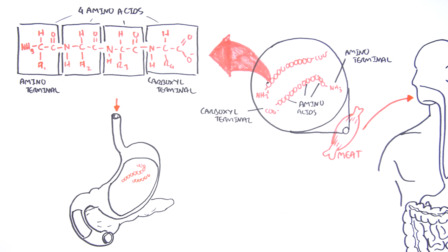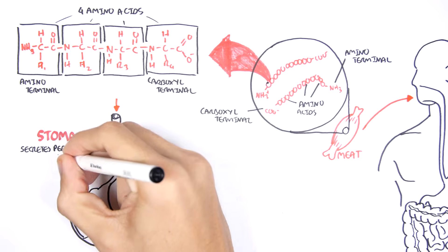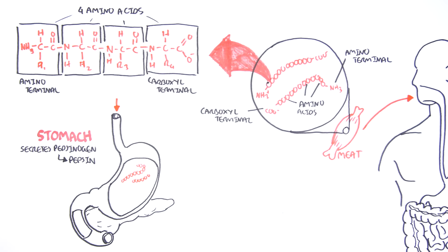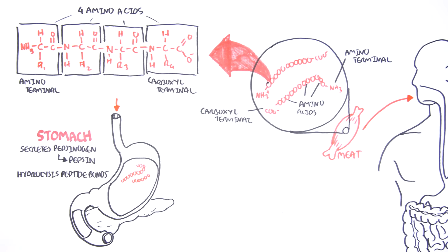The chemical digestion of protein actually begins in the stomach because the stomach secretes pepsinogen, which once secreted will convert to pepsin. Pepsin hydrolyzes peptide bonds, so it breaks the protein bonds, the amino acid bonds.